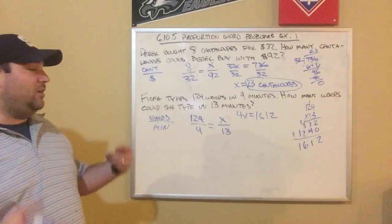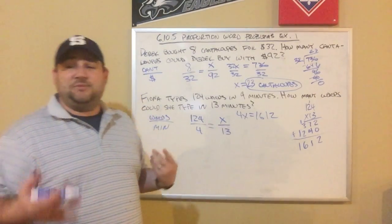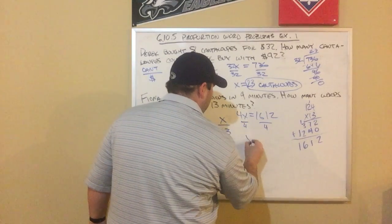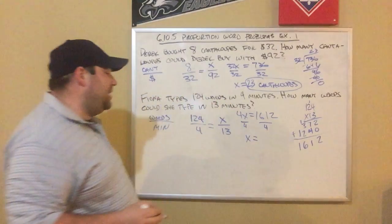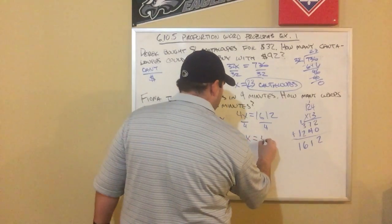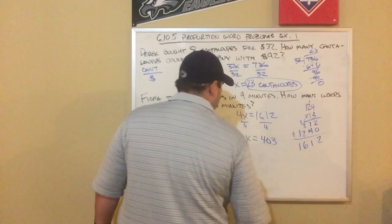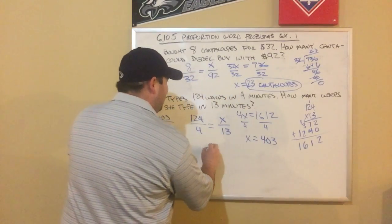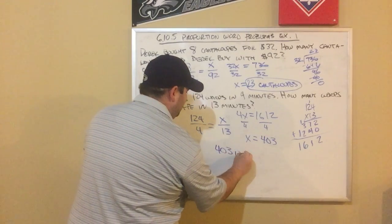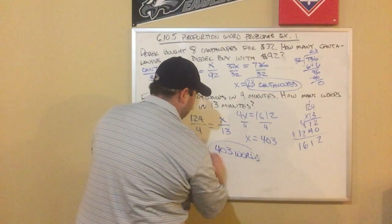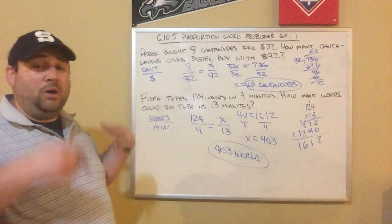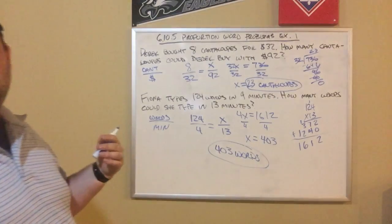Now we've cross multiplied and we just have a one-step equation. We divide by 4, and x equals 403. The question was how many words could she type, and her answer is 403 words. All right, so that was example one — I've got one more video for you on proportion word problems.